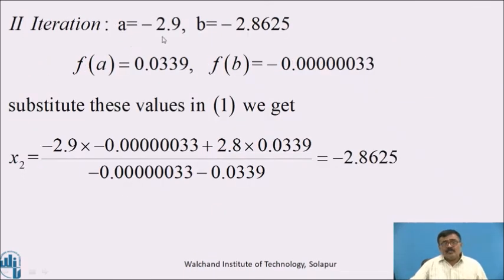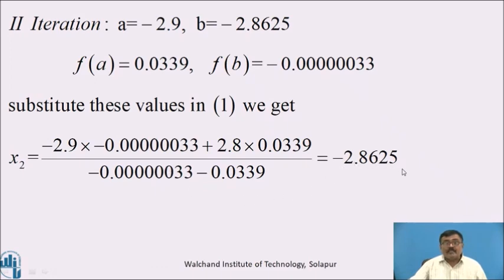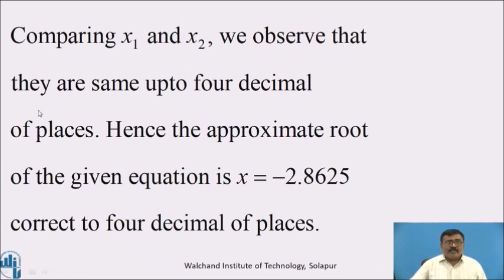Second iteration: here a = −2.9 and b = −2.8625, and f(a) = 0.0339, and f(b) = −0.00000033. Substituting these values in equation 1 and simplifying, we get x₂ = −2.8625. Comparing x₁ and x₂, we observe that they are the same up to 4 decimal places. Hence, the approximate root of the given equation is x = −2.8625, correct to 4 decimal places.